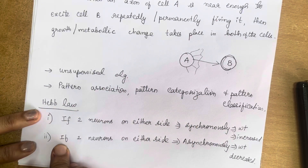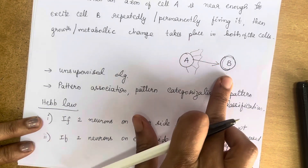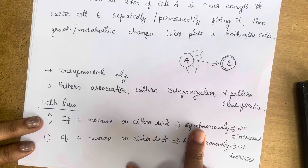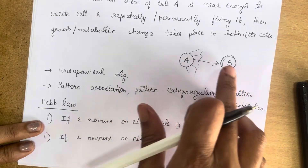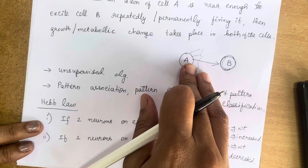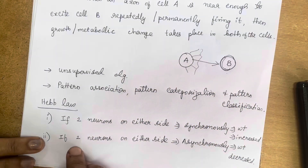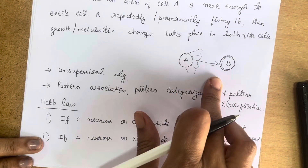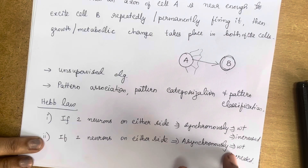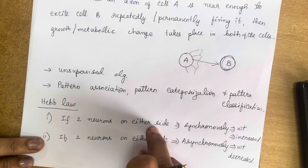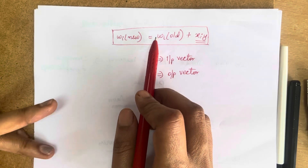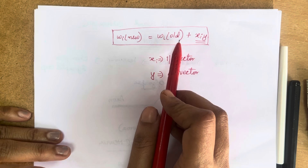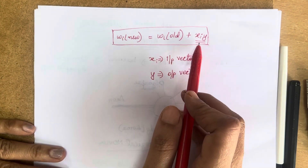Hebb's law follows two principles. The first principle is that if two neurons on either side of a connection are activated synchronously — both neurons activated at the same time — then the weight associated between the two neurons is increased. The second law says that if the two neurons on either side of the connection are activated asynchronously, then the weights associated with them are decreased. These are the two laws stated by Donald Hebb. When two interconnected neurons are on simultaneously, weights increase due to modification in the synaptic gap.